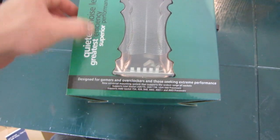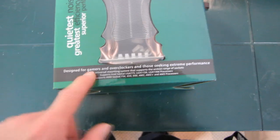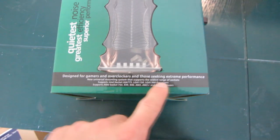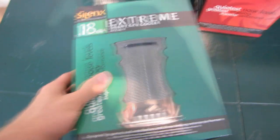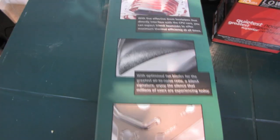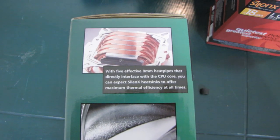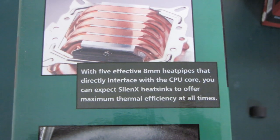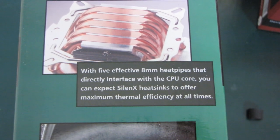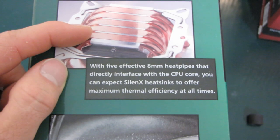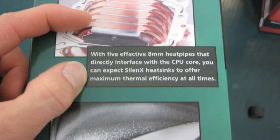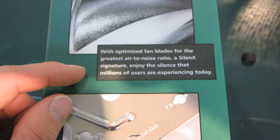It's got the quietest noise levels, greatest efficiency, and superior performance. It's designed for gamers and overclockers and those seeking extreme performance, or just those who are hit by this heat wave that seems to be hitting the entire continent this summer. We've got five effective 8mm heat pipes. Wow, those are big. And those all directly interface with the CPU core, going right on the CPU heat spreader.